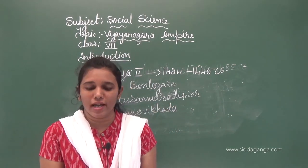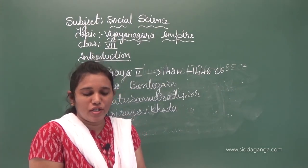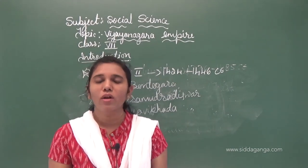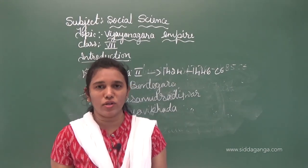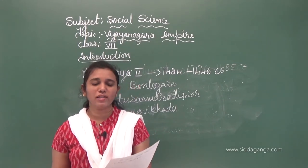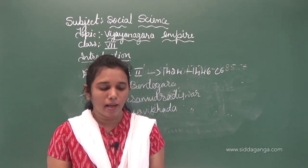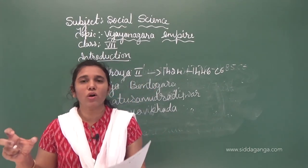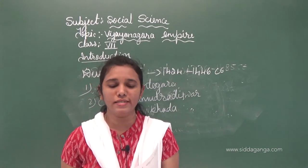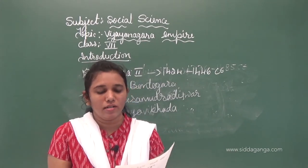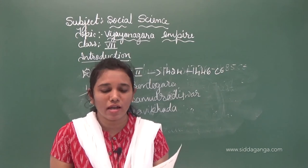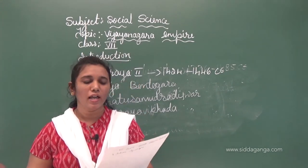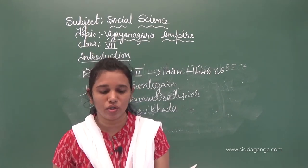After his death in 1446, his son Mallika Arjuna ruled between 1446 to 1465, and then Virupaksha 3rd ruled the Vijayanagara Empire. These were weak rulers, and because of this, a strong commander named Salva Narasimha captured the capital. With this, the rule of the Sangama dynasty ended in 1485.